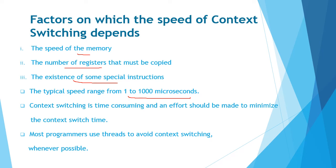As we have already seen, context switching is pure overhead — at that time the system doesn't do extra work, it just switches the states of one process to another. To minimize this context switch time requires extra effort, making it a time-consuming process. To avoid context switching, nowadays many programmers are moving towards threading, because that is much better than context switching.